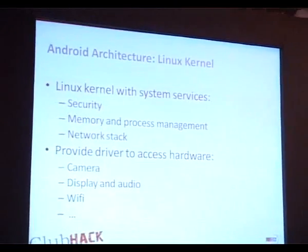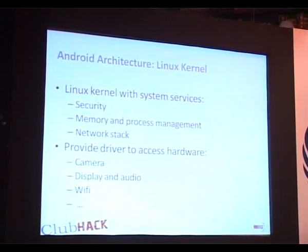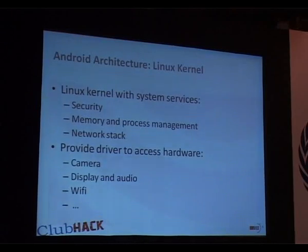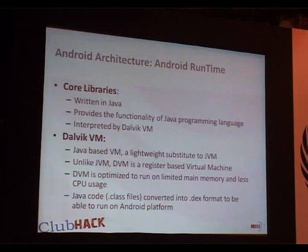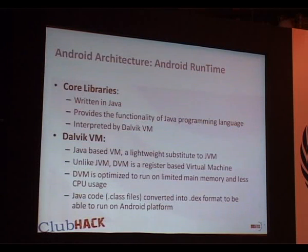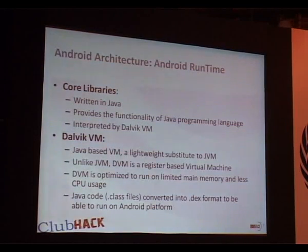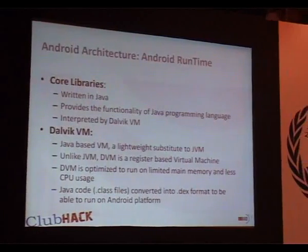Android uses a Linux 2.6 kernel for system services like security, memory and process management, and network stack, and provides drivers to access hardware like camera, Bluetooth, audio, video, and Wi-Fi. The Android runtime consists of core libraries and the Dalvik VM. Core libraries are written in Java and provide Java-like functionality. Dalvik VM is a lightweight, register-based substitute to JVM, optimized for limited memory and less CPU usage. Java code gets converted via DX to run on the Android platform, and each application gets a separate instance of DVM.